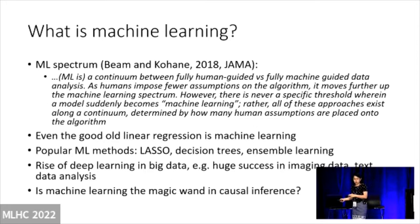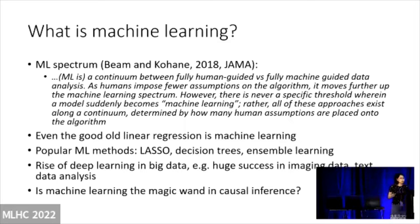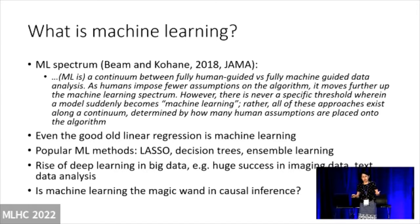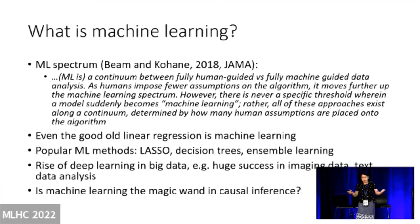Before I get to the main point, I want to point out one thing. We often ask: what is machine learning? I pulled this 2018 JAMA paper — machine learning is really a spectrum. It's a continuum between fully human-guided versus fully machine-guided data analysis. As humans impose fewer assumptions on the algorithm, it moves further up in the machine learning spectrum. There's never a specific threshold at which point you're doing machine learning — all these approaches exist along a continuum, determined by how many human assumptions are placed into the algorithm.